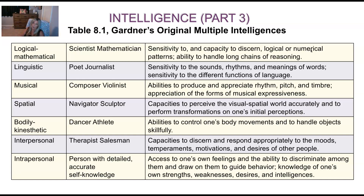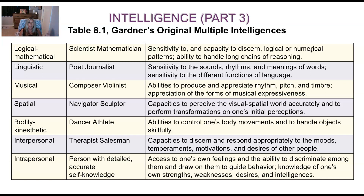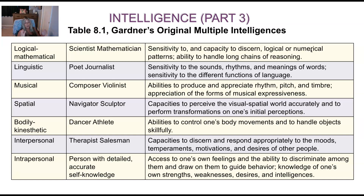Then there's interpersonal and intrapersonal intelligences. Your logical-mathematical people are very science and math based. Your linguistic people are your poets and journalists. Your musical people are your composers. Your spatial people are like sculptors — very good navigators. Bodily-kinesthetic: dancer, athlete. Interpersonal — if you have good interpersonal skills, you could potentially make a good therapist or a salesperson. And intrapersonal — that's a person with detailed, accurate self-knowledge.